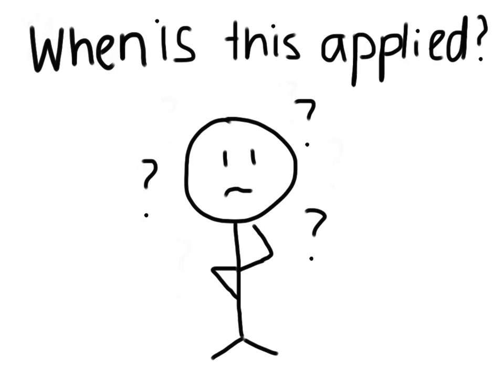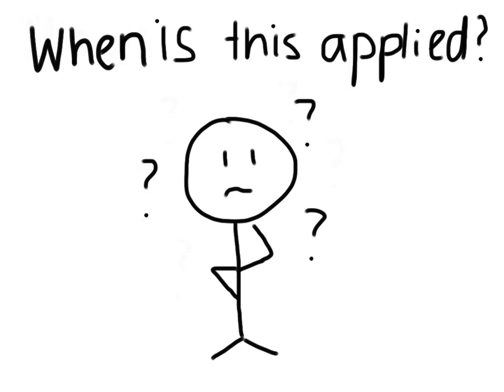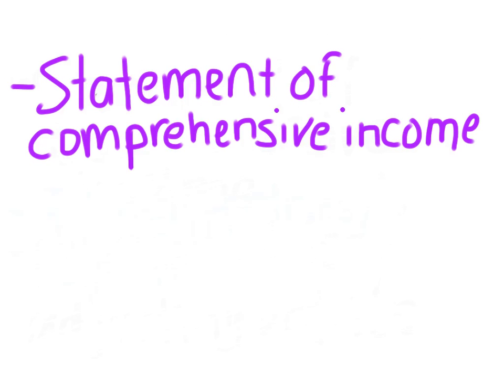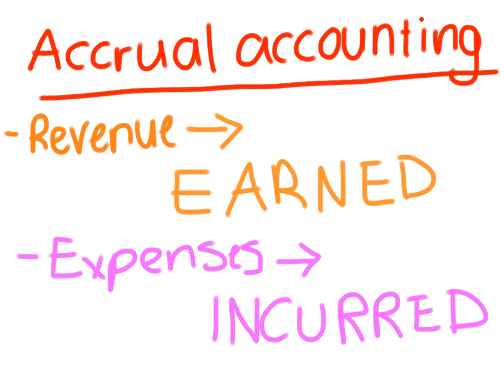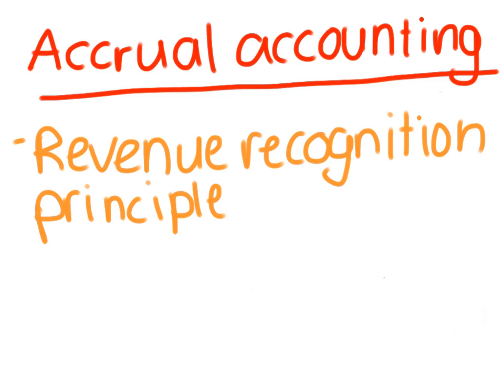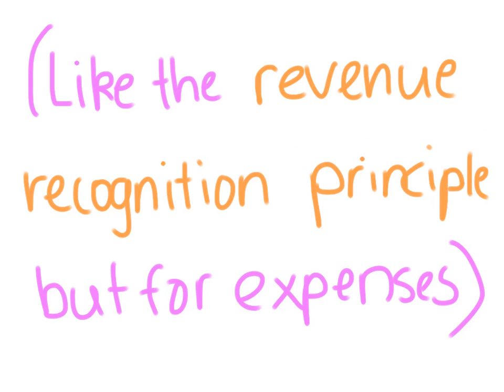So when is the revenue recognition principle applied in accounting? It is used when producing the statement of comprehensive income, which is a financial statement that records the revenues and expenses of the accounting period to determine a company's profit or loss. It is also used for adjusting entries, which is accrual based. Accrual accounting can be summed up as: revenue is recorded when earned and expenses are recorded when incurred — which is basically the revenue recognition principle and the matching principle. The matching principle is like the revenue recognition principle, but for expenses.